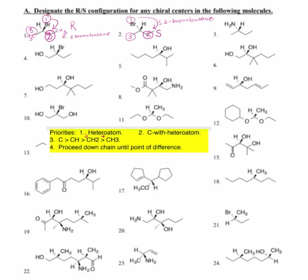For number three, we also have a butane, and this time we have an amine. Our heteroatom is CIP priority number one. The ethyl side is going to be CIP priority number two, because CH2 is greater than CH3. Hydrogen is coming out towards us, so although we are rotating clockwise, with hydrogen coming out towards us this is an S configuration.